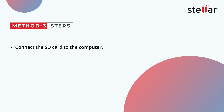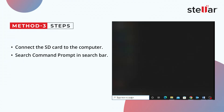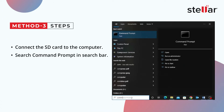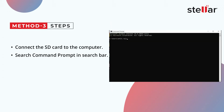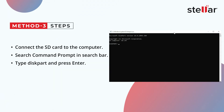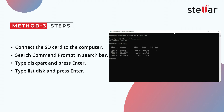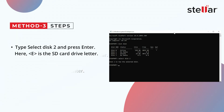Just connect the SD card to the computer. Then search command prompt in the search bar. The CMD window will open as per the option you choose. Then type Diskpart and press Enter. A new window will appear. Then type List Disk and press Enter. Now you'll see a list of all the connected drives to your computer. From the list, find and note the disk letter of your SD card.